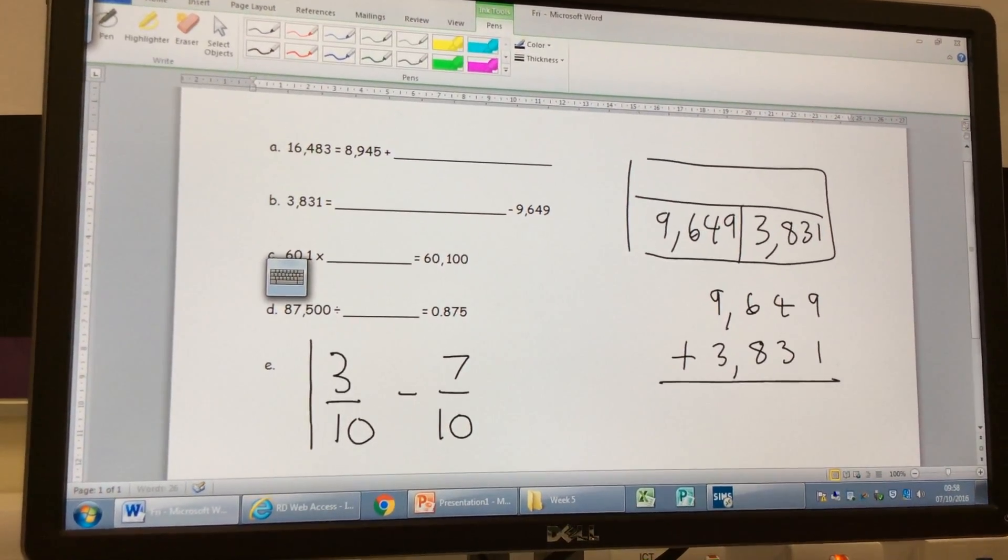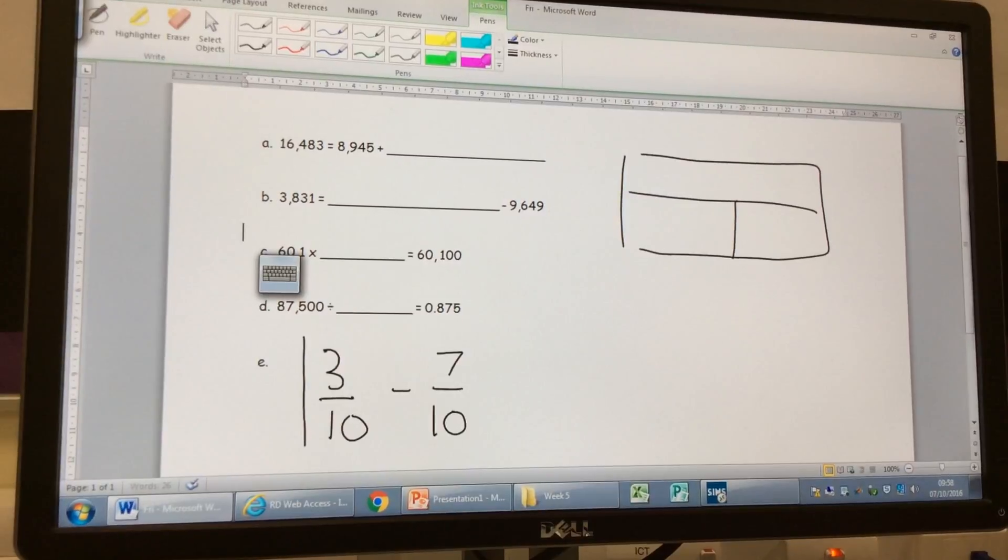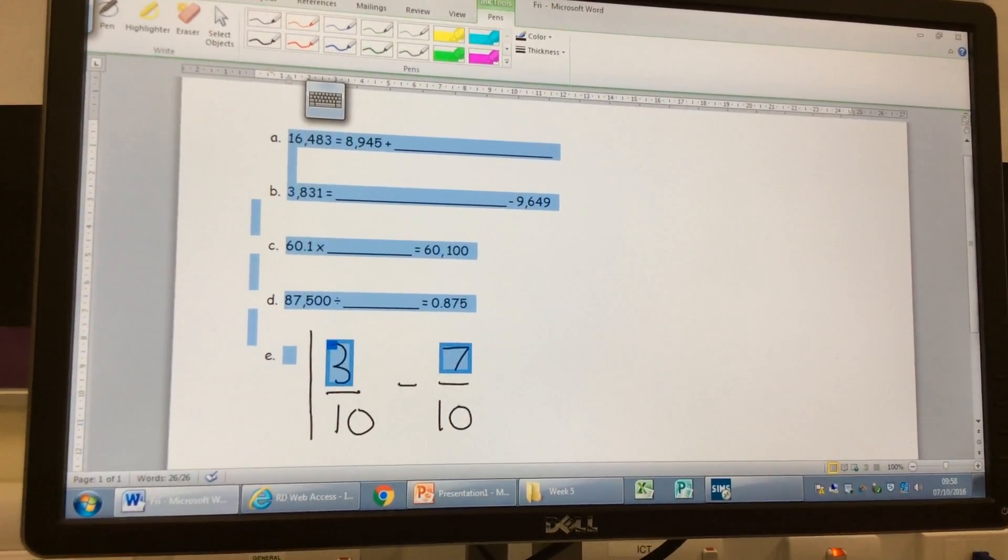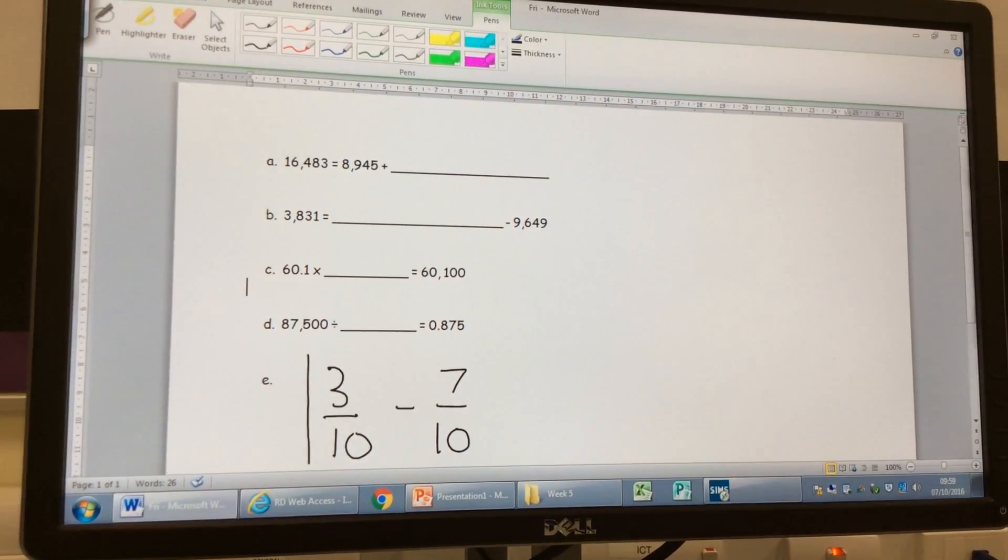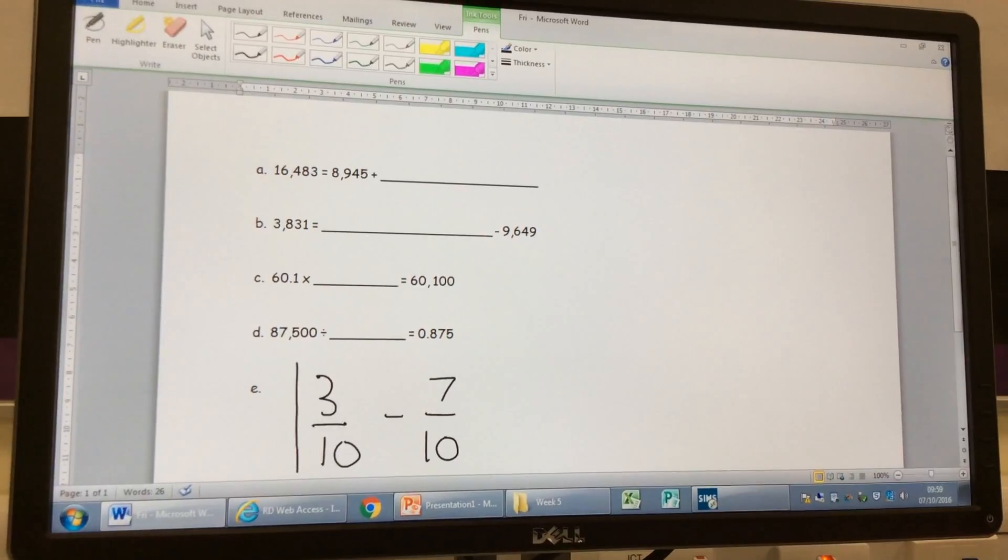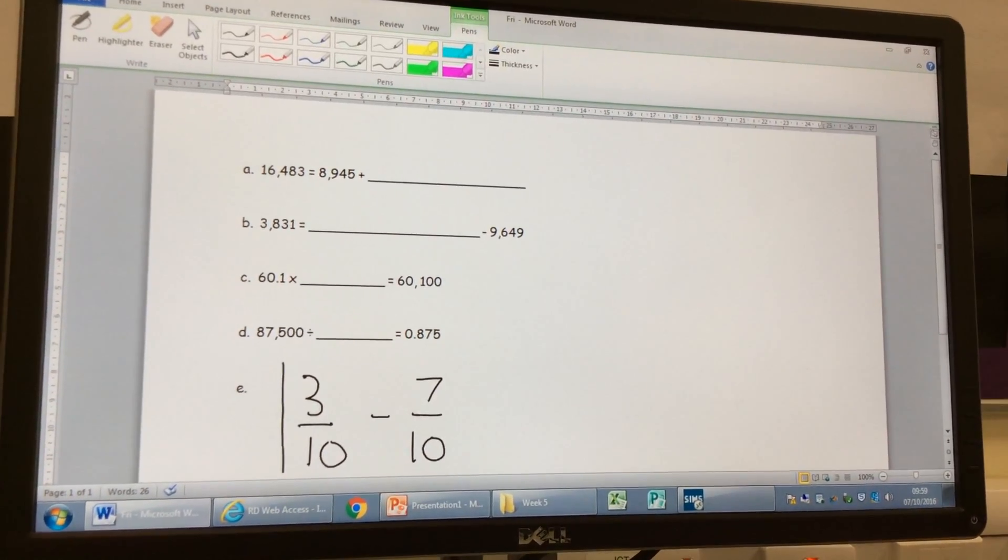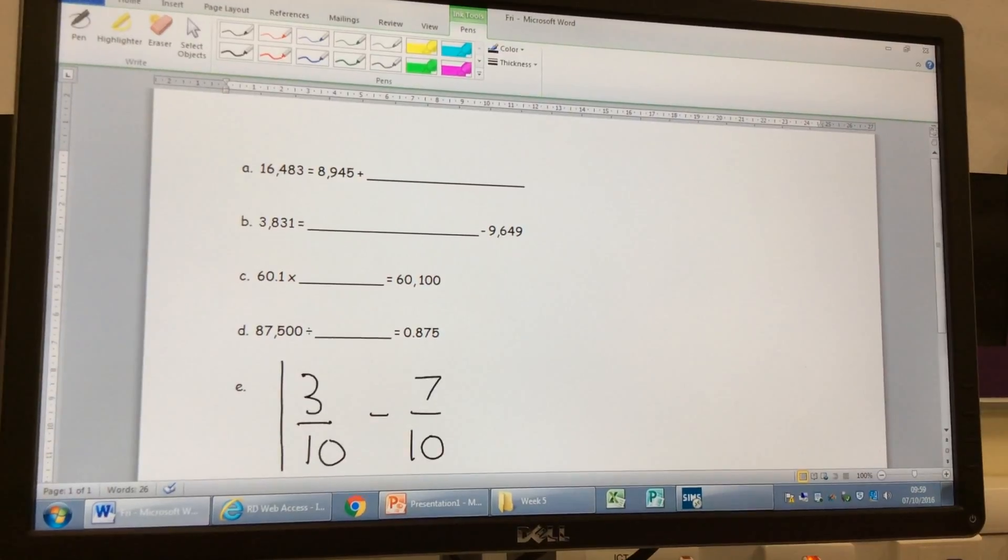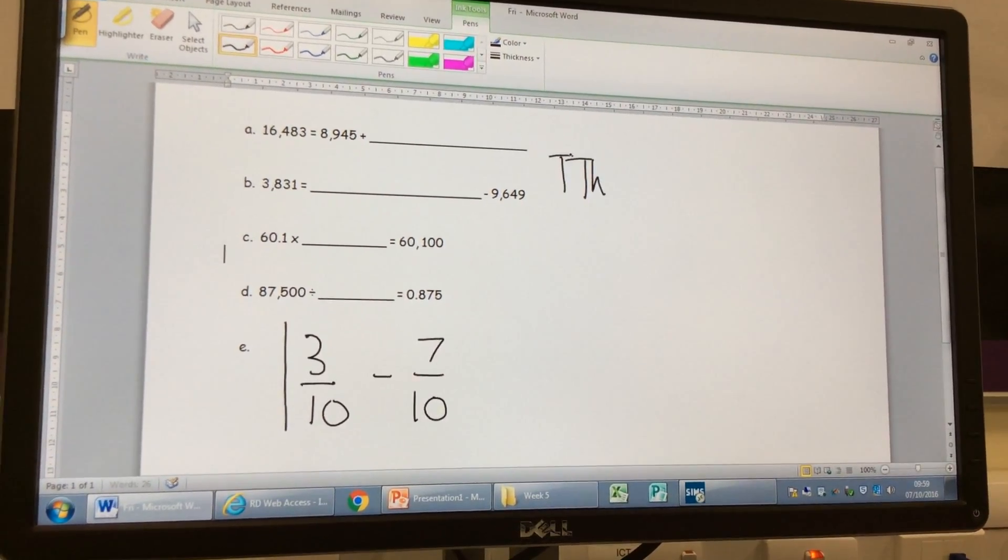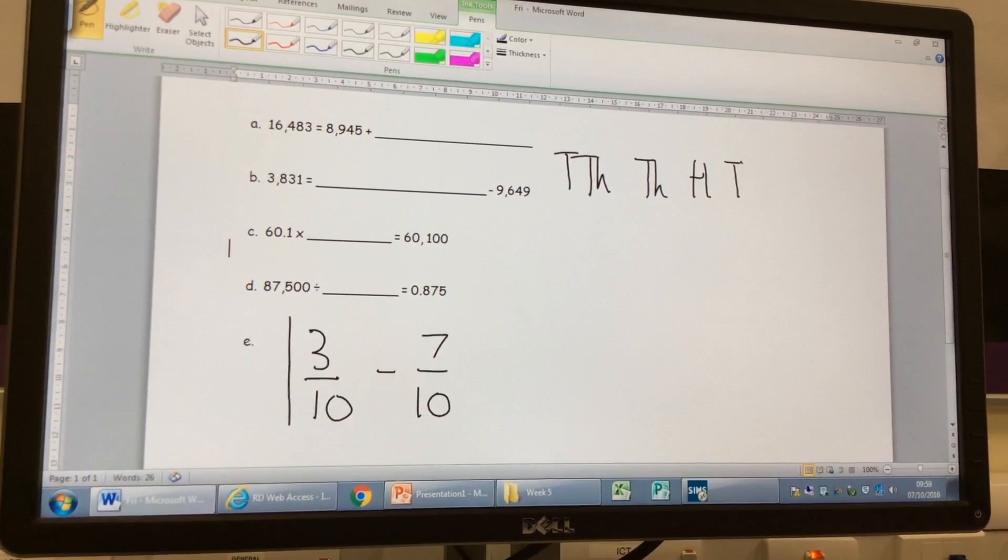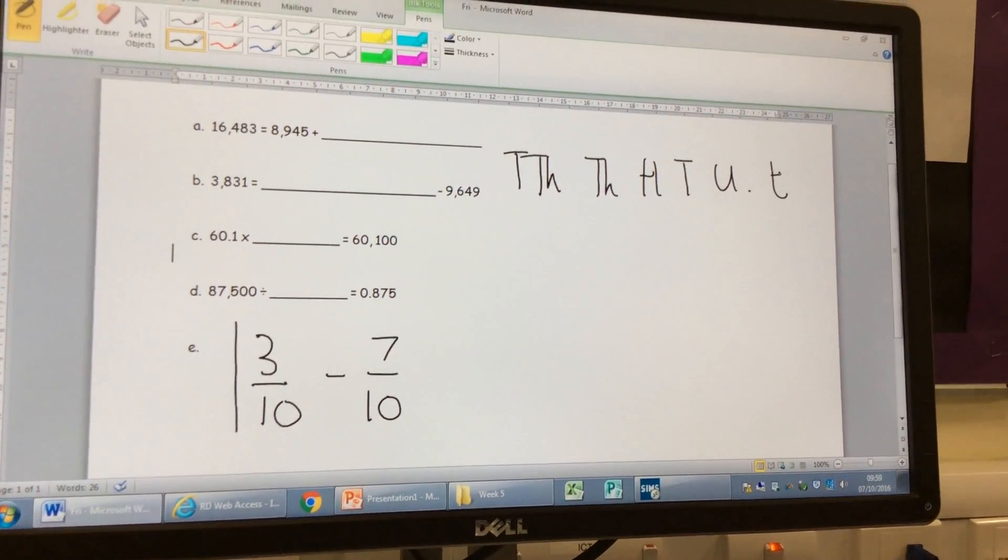Right, who can do the next one for me? So we've got 60.1 times something equals 60,100. Who can tell me what we're missing there, and how do we work it out? I think the missing number is 1,000. Would you like to explain to me how you work that out, Maisha? Go for that explanation again, Maisha, a little bit louder. Tell me what you did first of all, now we've got our columns in.